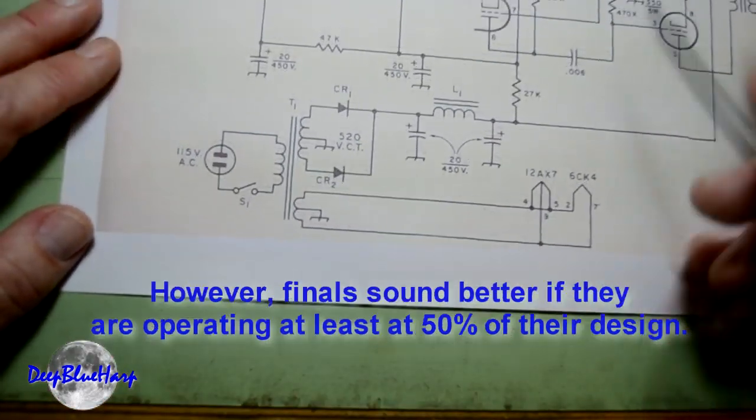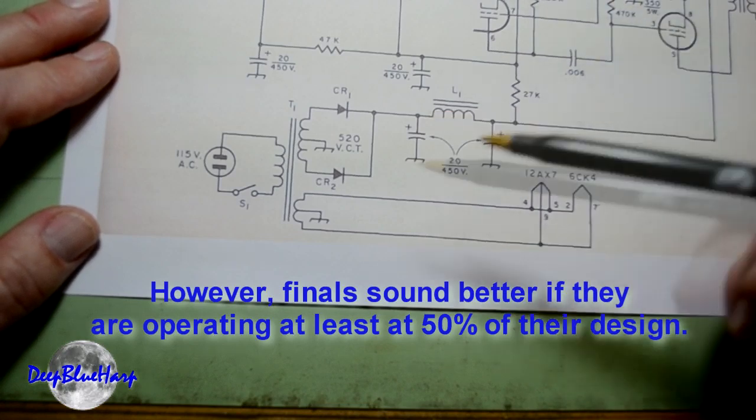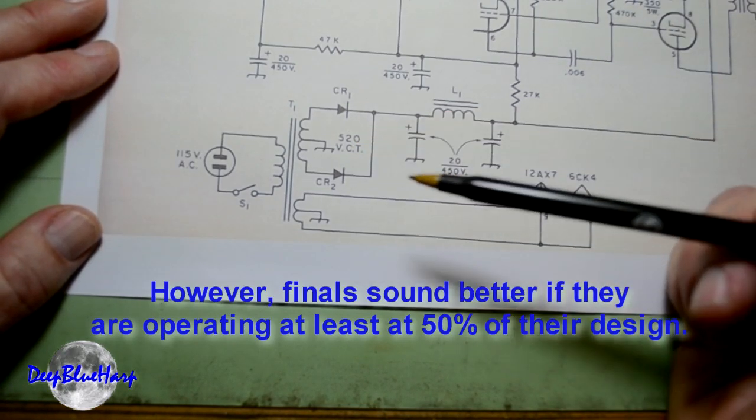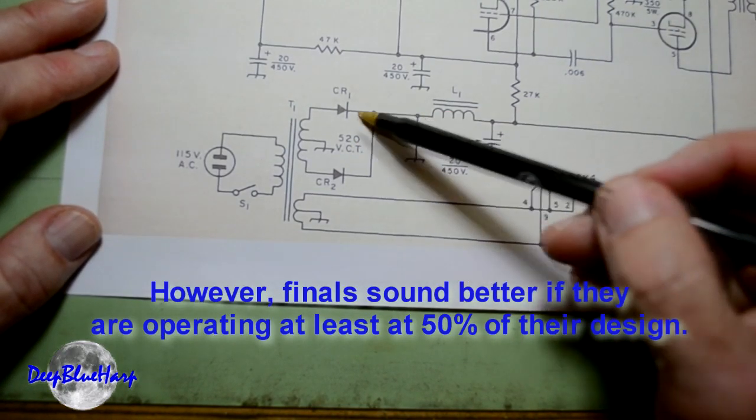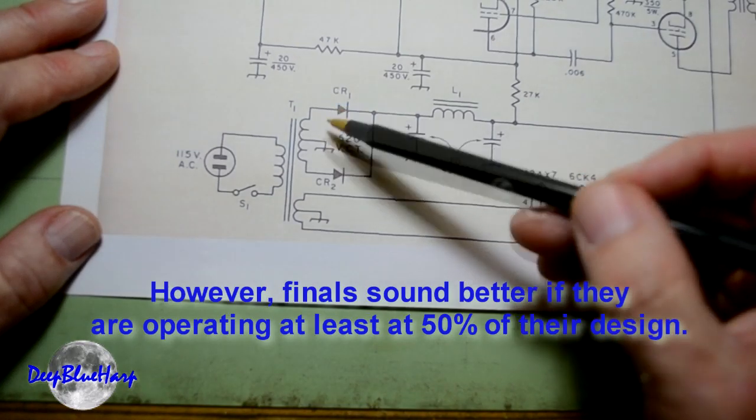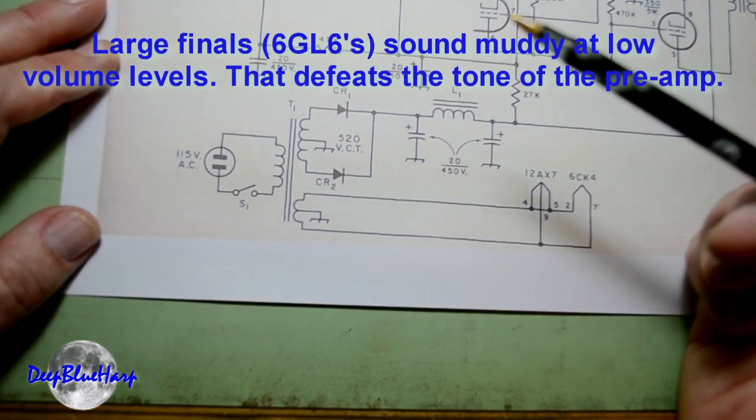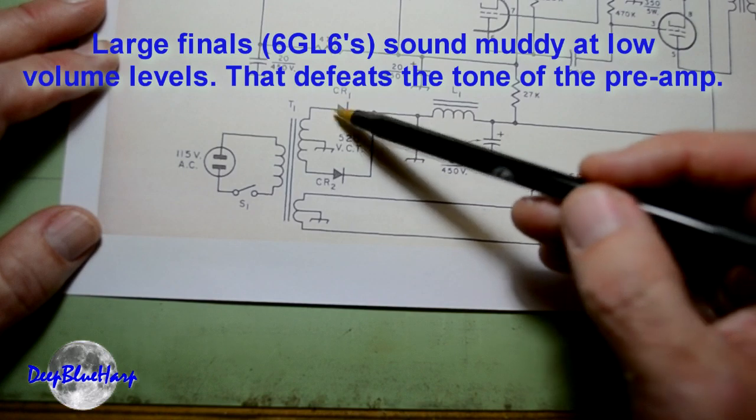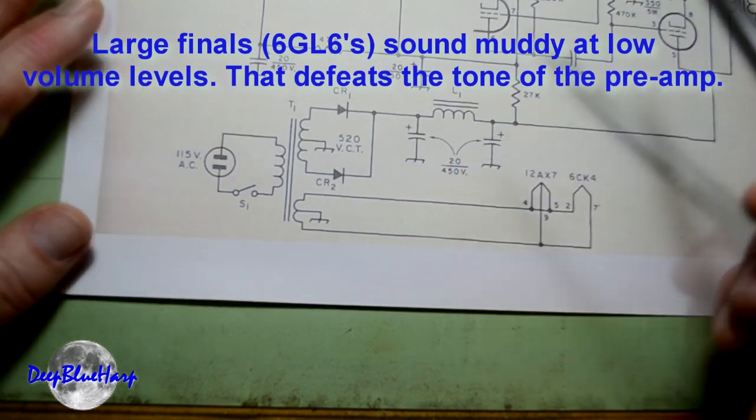Now then, you can get fancy transformers, and in this case for this circuit, 520 volt center tap, which means we're probably talking 1000 volts. So between here, center tap, and here, we're probably looking at 520, but between here is 1000 volts. We're not going to do that.